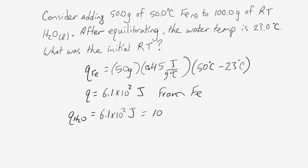We know that the amount of heat that was transferred was 6.1 times 10 to the 2 joules. The water weighed 100 grams and the water's heat capacity is 4.184 joules per gram degree Celsius.